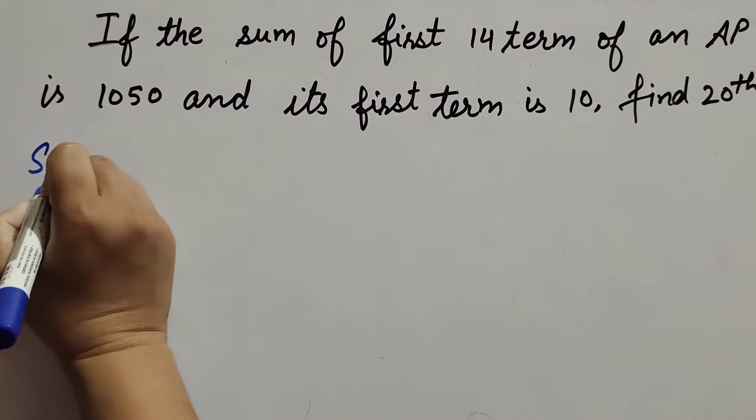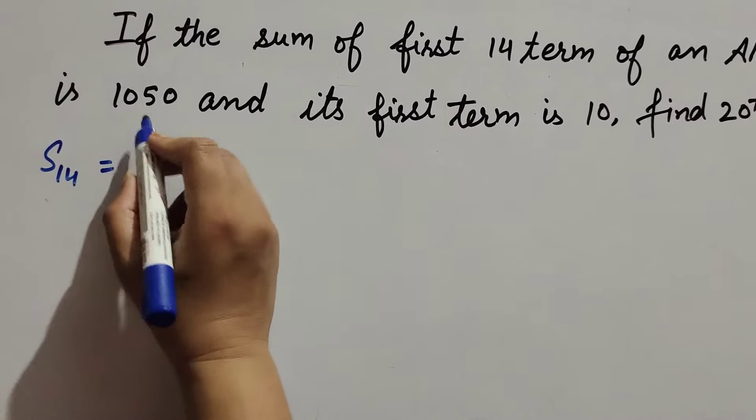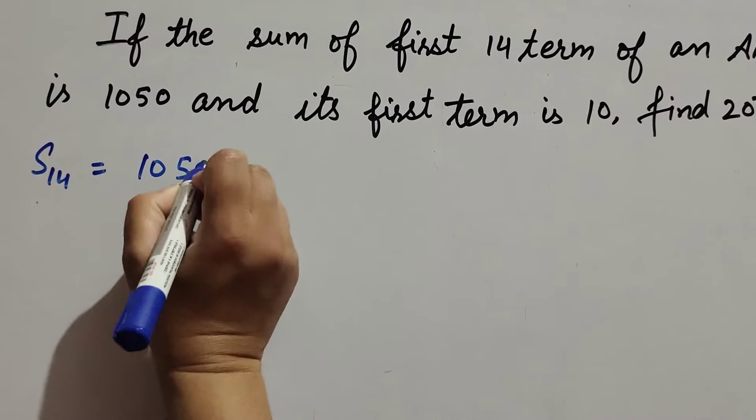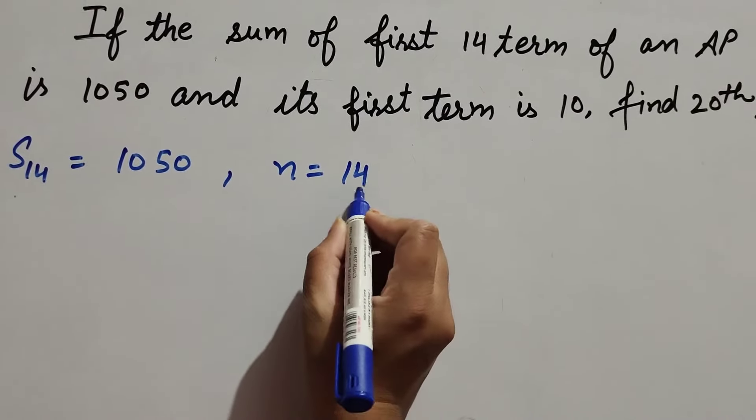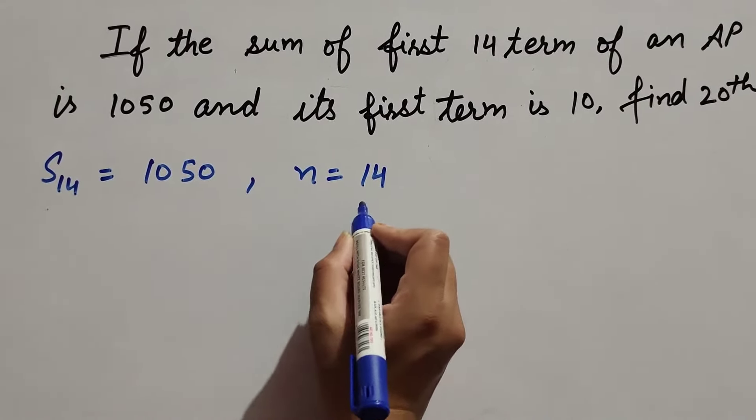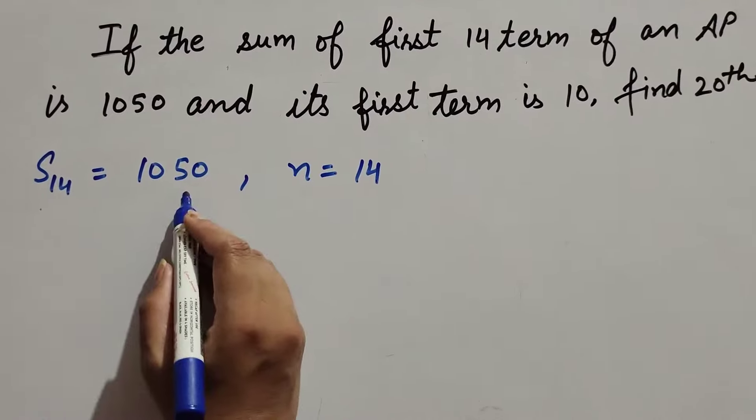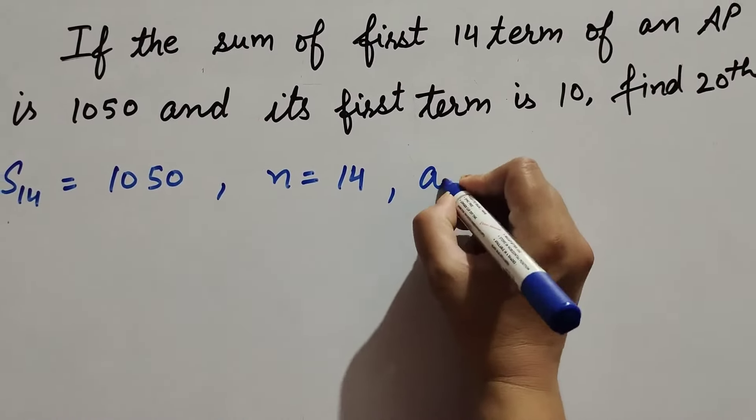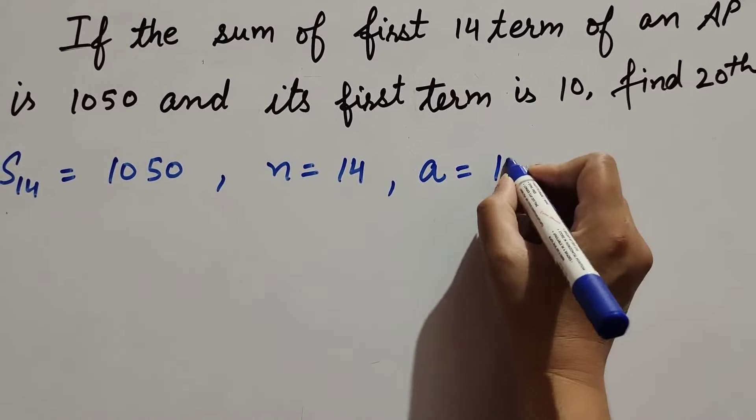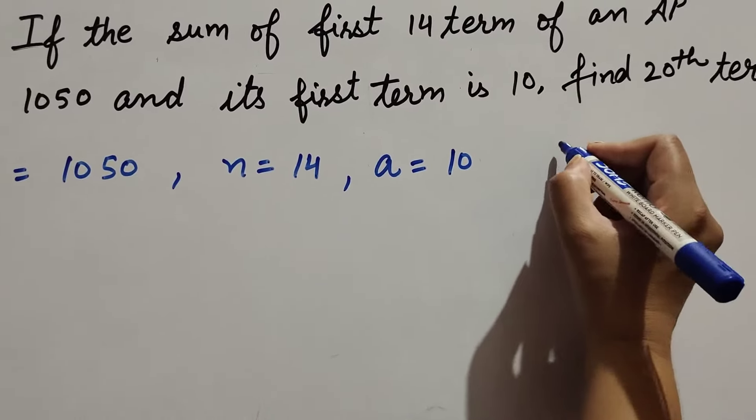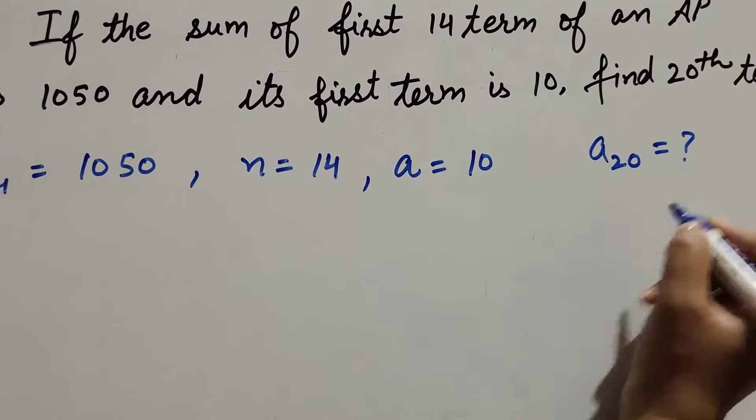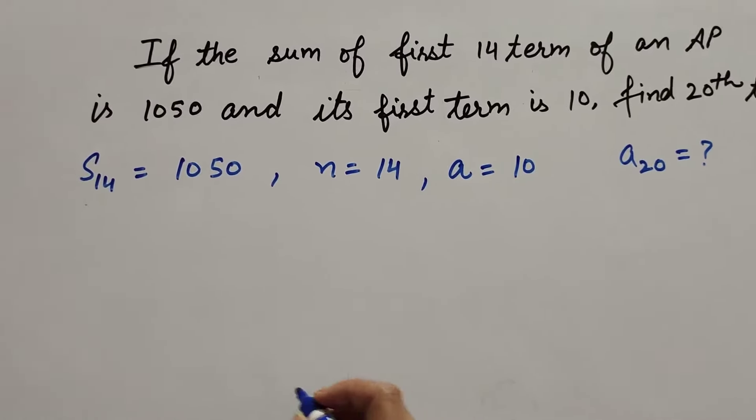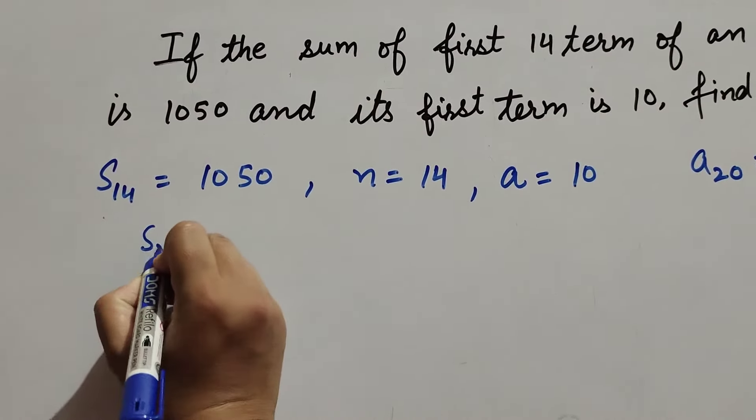So given is sum of 14 terms equal to 1050, and number of terms n equal to 14 because the sum of 14 terms is 1050. First term, that is a, equal to 10. And we find 20th term, a_20, that we have to find.